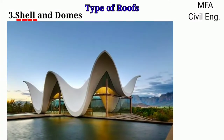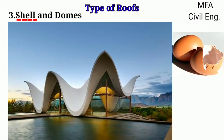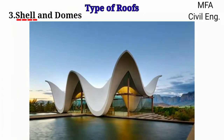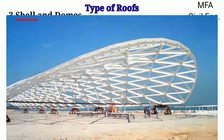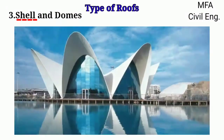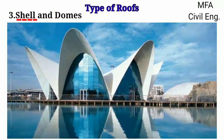Shell is a roof structure that looks like the shell of an egg. These are three-dimensional structures consisting of a thin slab curved in one or more directions which transfers the load to the points of support. Shells are constructed of many materials like timber, steel, glass and reinforced cement concrete, with reinforced cement concrete being the most popular.